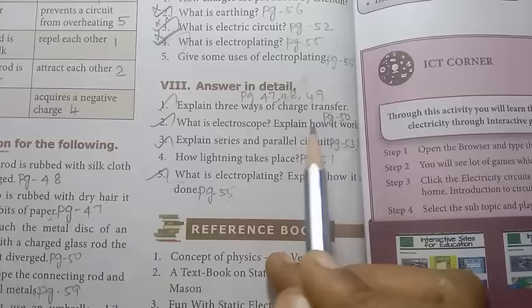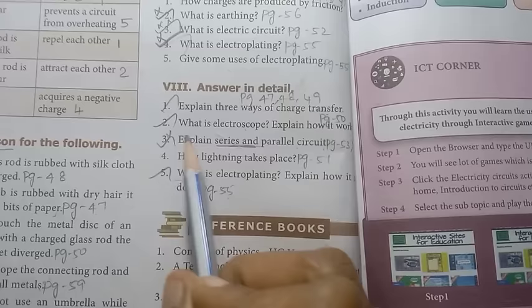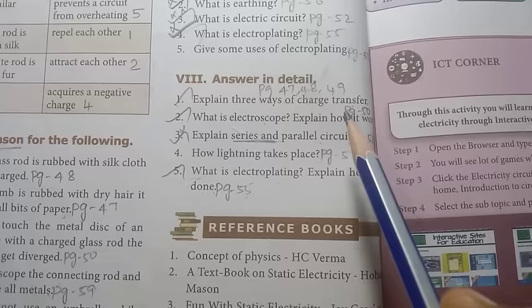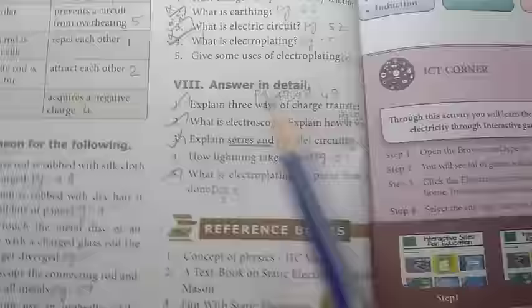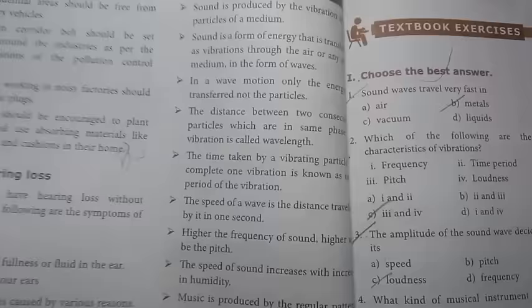Answer in detail: Explain three ways of charge transfer. What is electroscope? Explain how it works. Explain series and parallel circuit. Repeat, where you can ask questions. What is electroplating? Explain how it's done. So different districts ask different questions. In this lesson, let's try to memorize the four details.